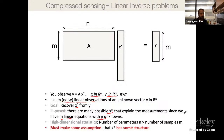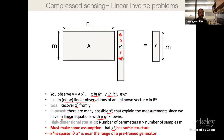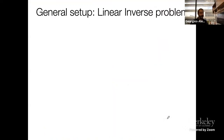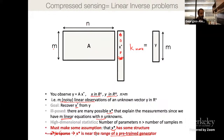To deal with this in compressed sensing, we must assume x* has some structure. The classical structure is sparsity: x* has only a few non-zero entries. If you assume only k non-zeros, you can develop the rich theory of compressed sensing, which says you can reconstruct when m is something like k log n measurements. My framework replaces sparsity with the assumption that x* is near the range of a pre-trained generator G(Z). This structural assumption has been proven to be strictly more general than sparsity.